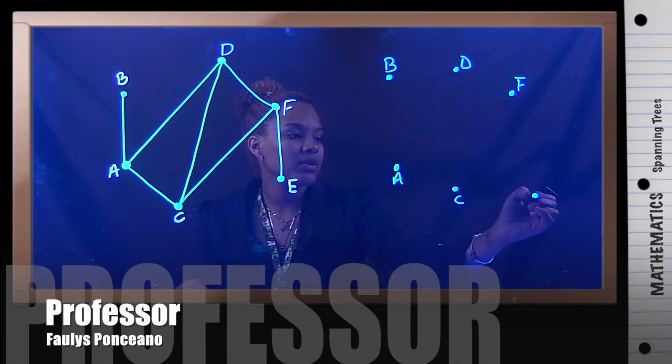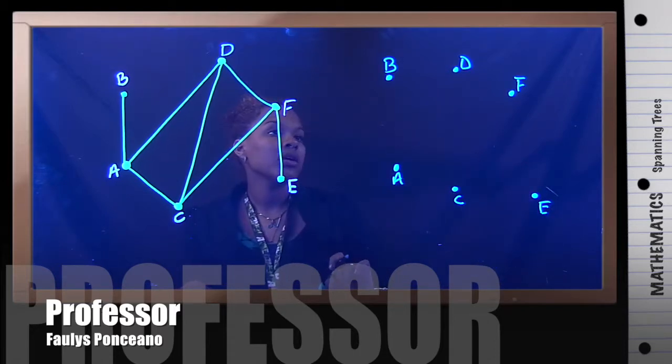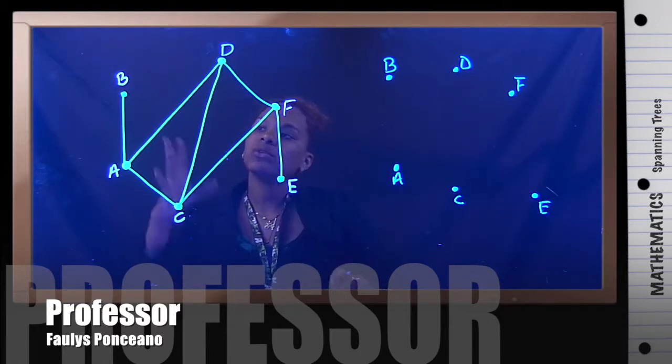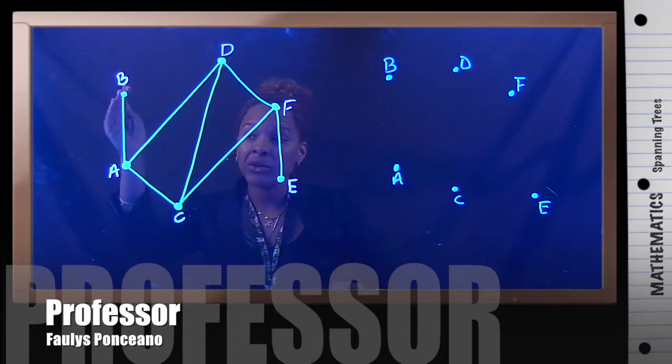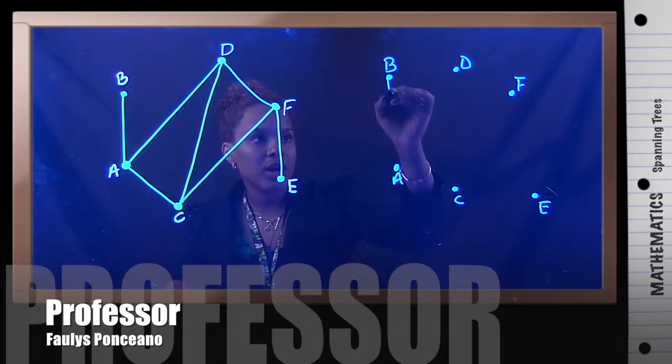And I have E. Right? Now I have all my vertices. Now I'm going to start with B. I'm going to have my first bridge. I'm going to draw it from B to A.